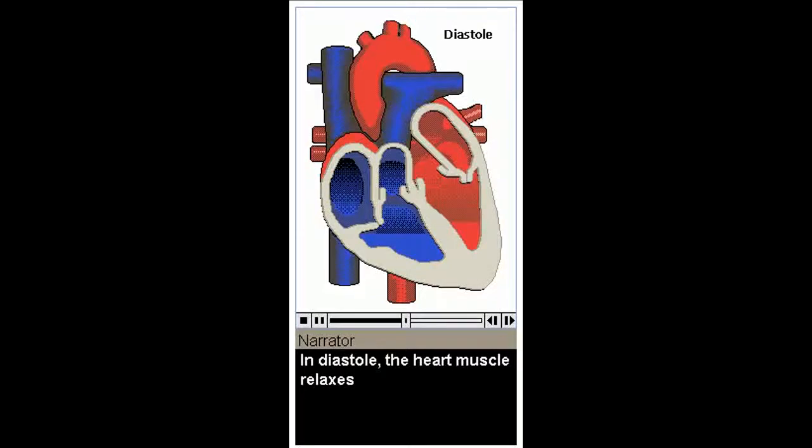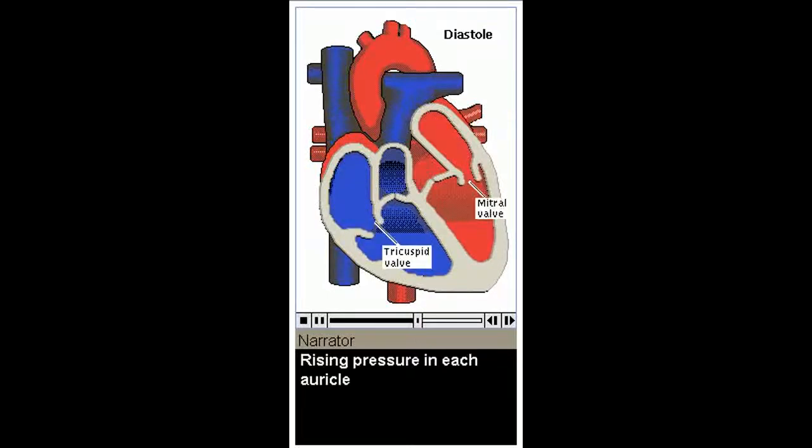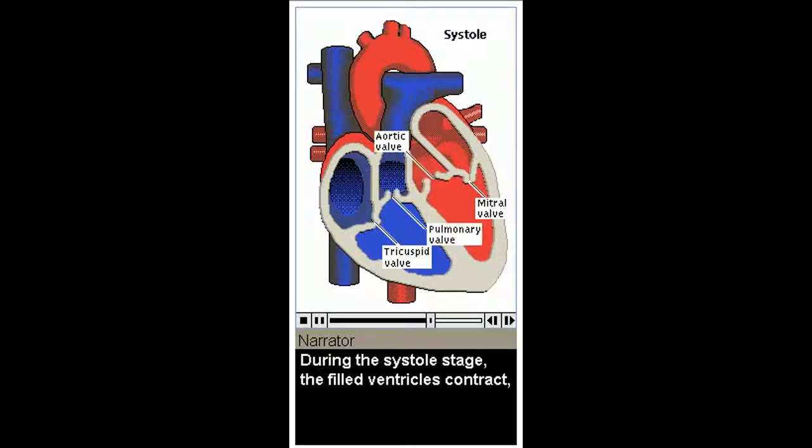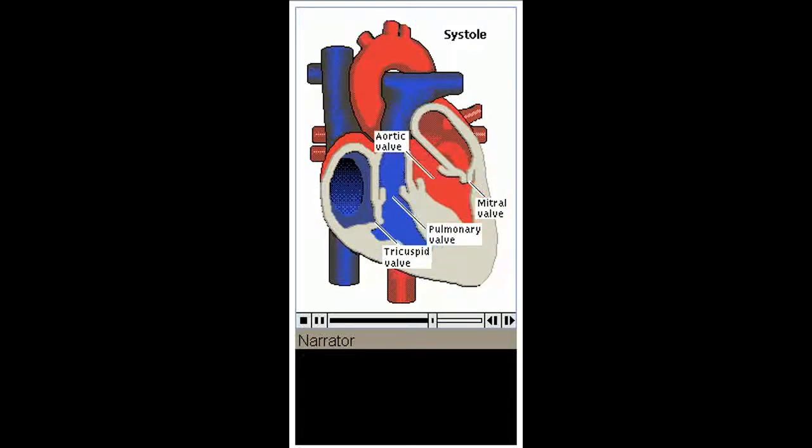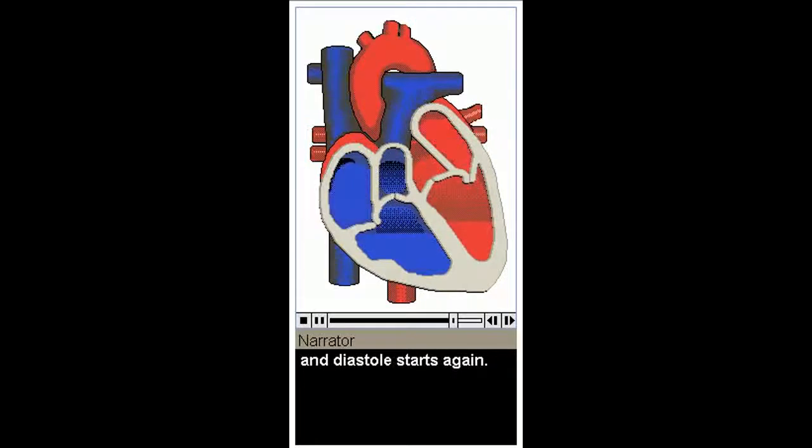In diastole, the heart muscle relaxes and blood is drawn into the two auricles. Rising pressure in each auricle opens the tricuspid and mitral valves and blood flows into the ventricles. Each auricle contracts, filling ventricles to capacity. During the systole stage, the filled ventricles contract. The mitral and tricuspid valves close. The aortic and pulmonary valves are forced open, and blood pushes out into the arteries. Then, the heart relaxes, the aortic and pulmonary valves close, and diastole starts again.